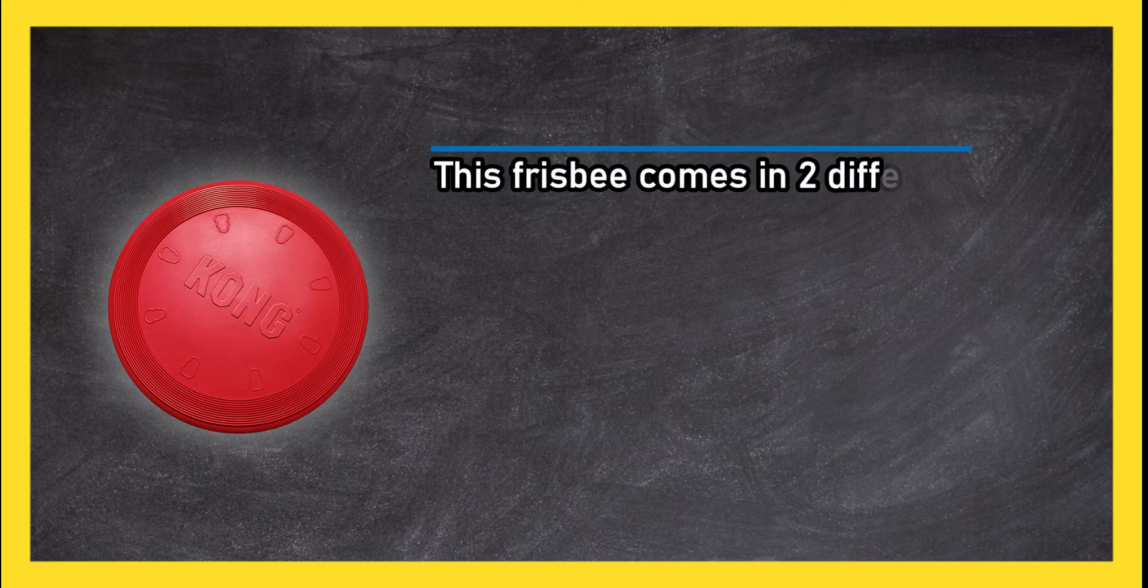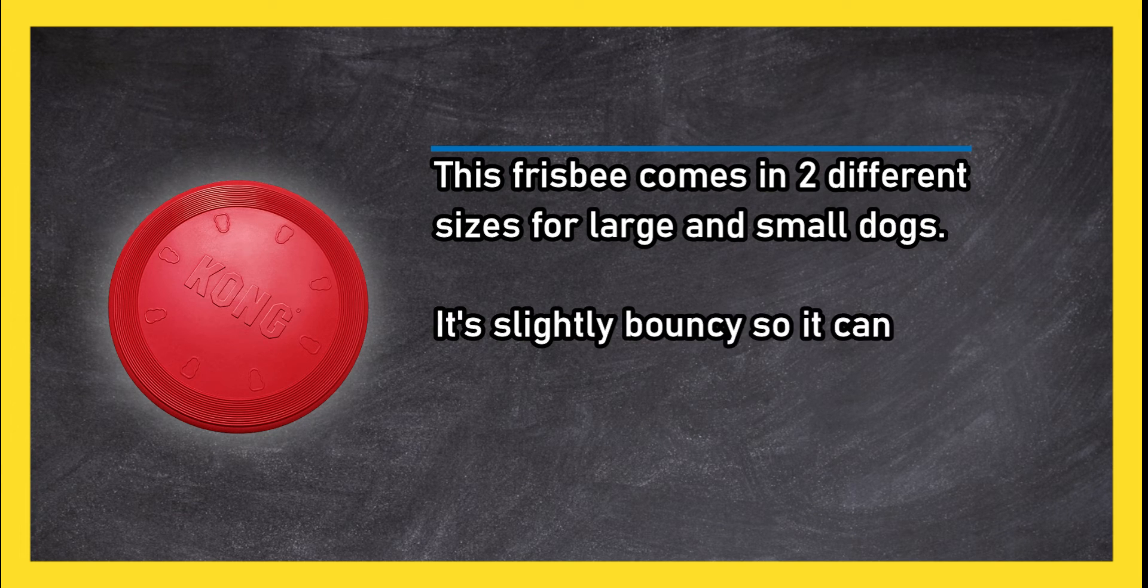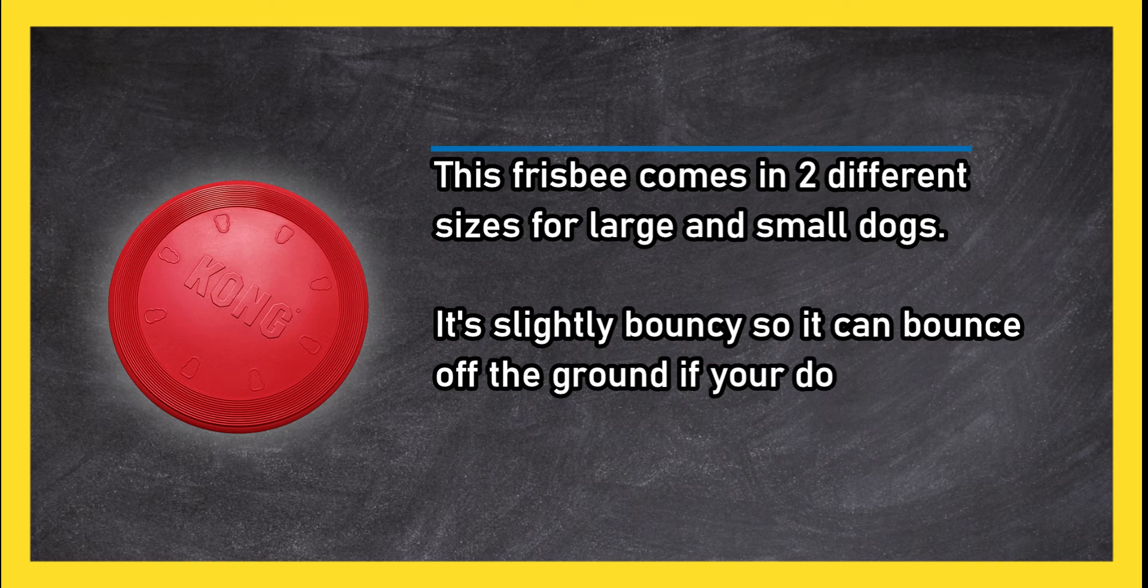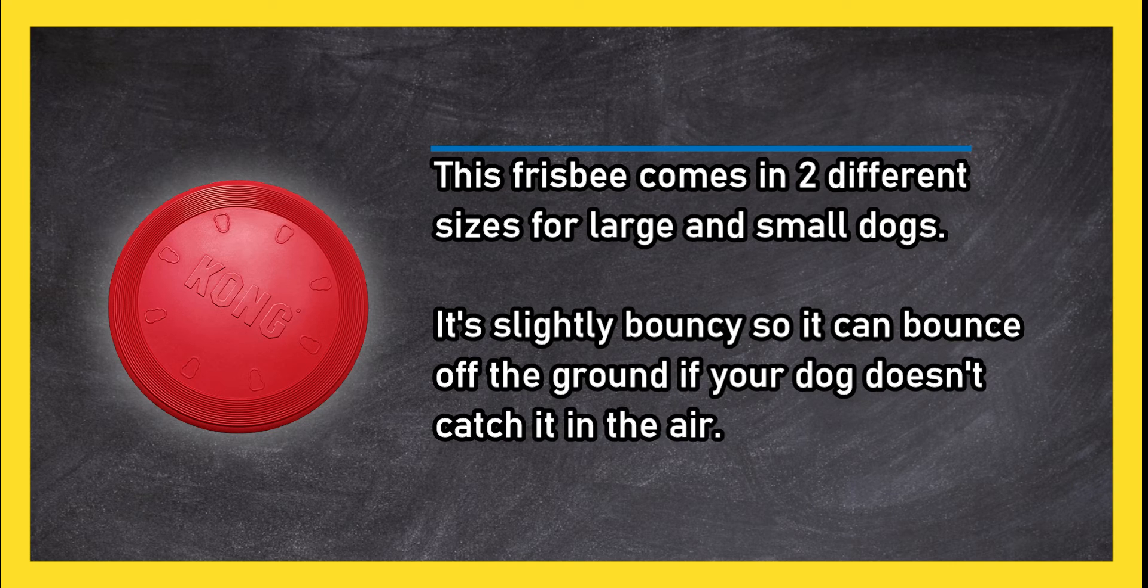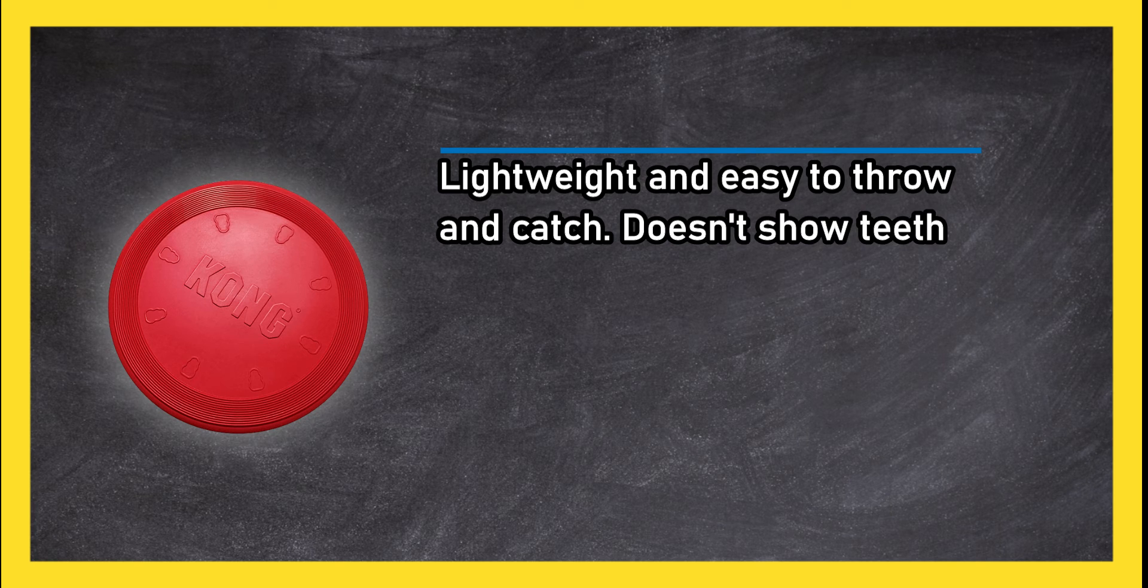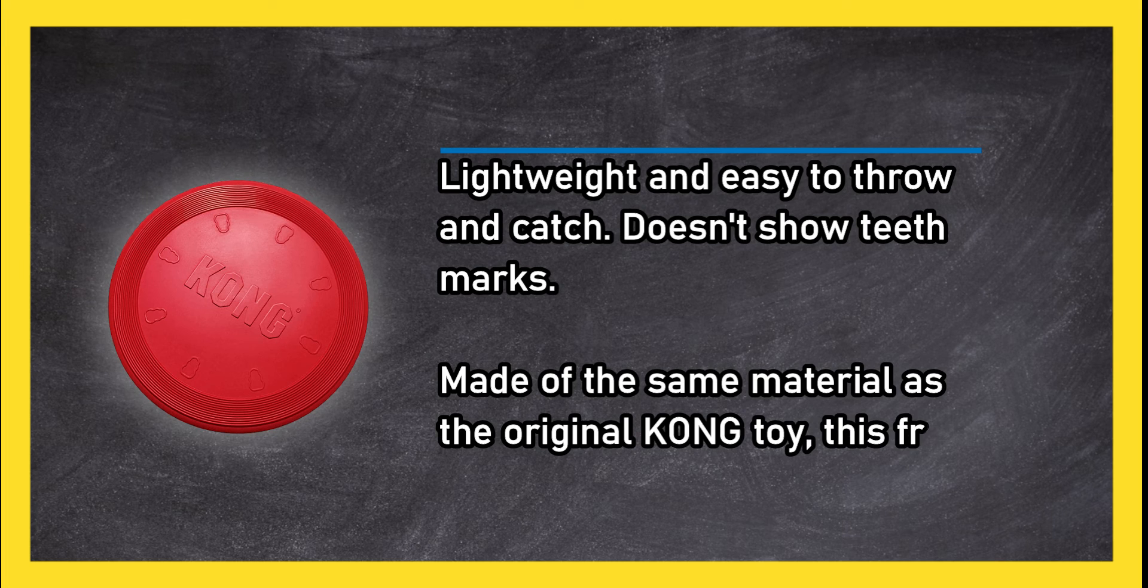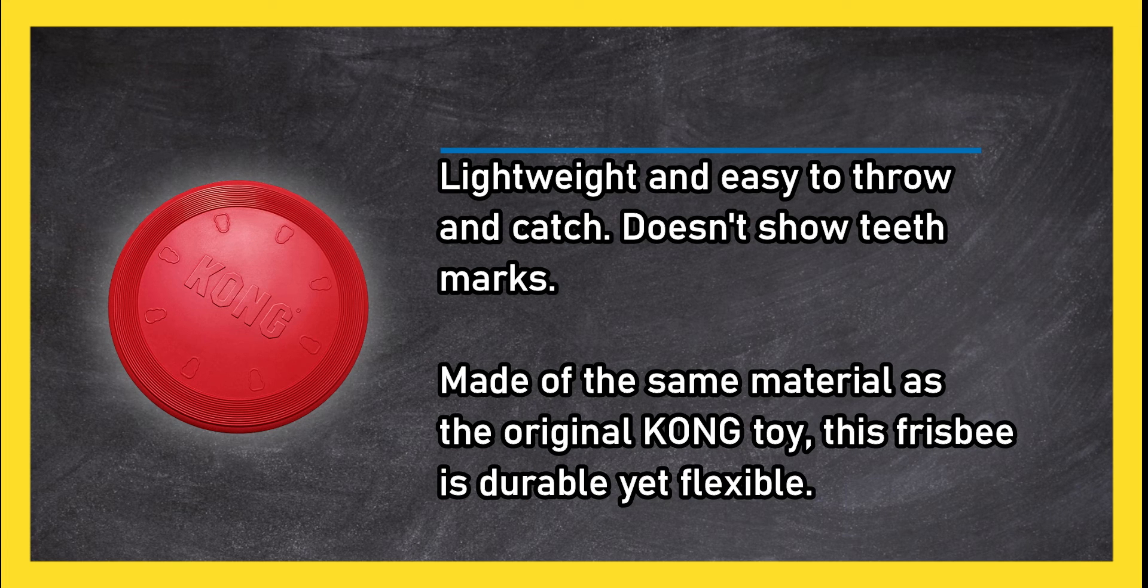At number one, Kong Classic Flyer Frisbee. This frisbee comes in two different sizes for large and small dogs. It's slightly bouncy so it can bounce off the ground if your dog doesn't catch it in the air. Lightweight and easy to throw and catch, doesn't show teeth marks. Made of the same material as the original Kong toy, this frisbee is durable yet flexible.